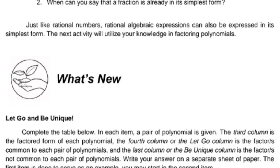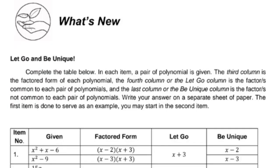Just like rational numbers, rational algebraic expressions can also be expressed in their simplest form. The next activity will utilize your knowledge in factoring polynomials. Complete the table below. In each item, a pair of polynomials is given. The third column is the factored form of each polynomial. The fourth column, or the 'let go' column, is the factor or factors common to each pair of polynomials. The last column, or the 'be unique' column, is the factors not common to each pair of polynomials.